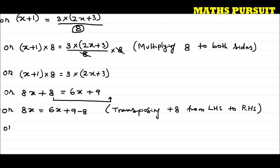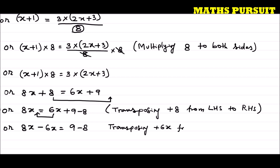Or I can write 8x minus 6x is equal to 9 minus 8. I moved 6x to the left side of the equation — that means transposing — because I need to move all variables having x to the left side. Transposing plus 6x from right hand side to left hand side.